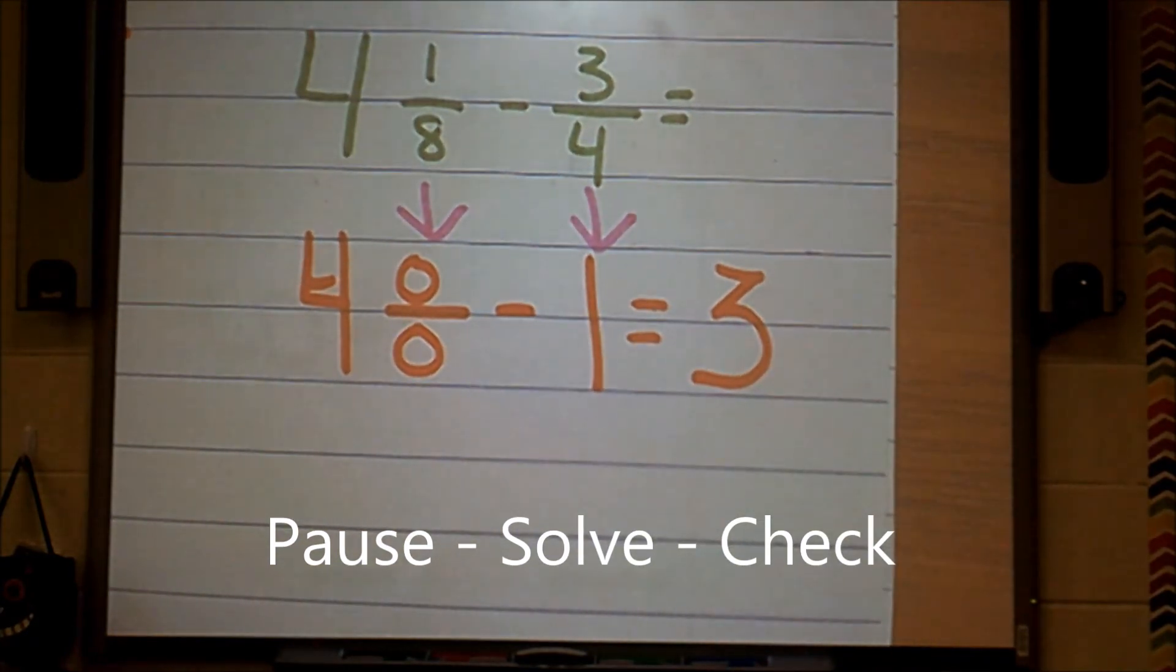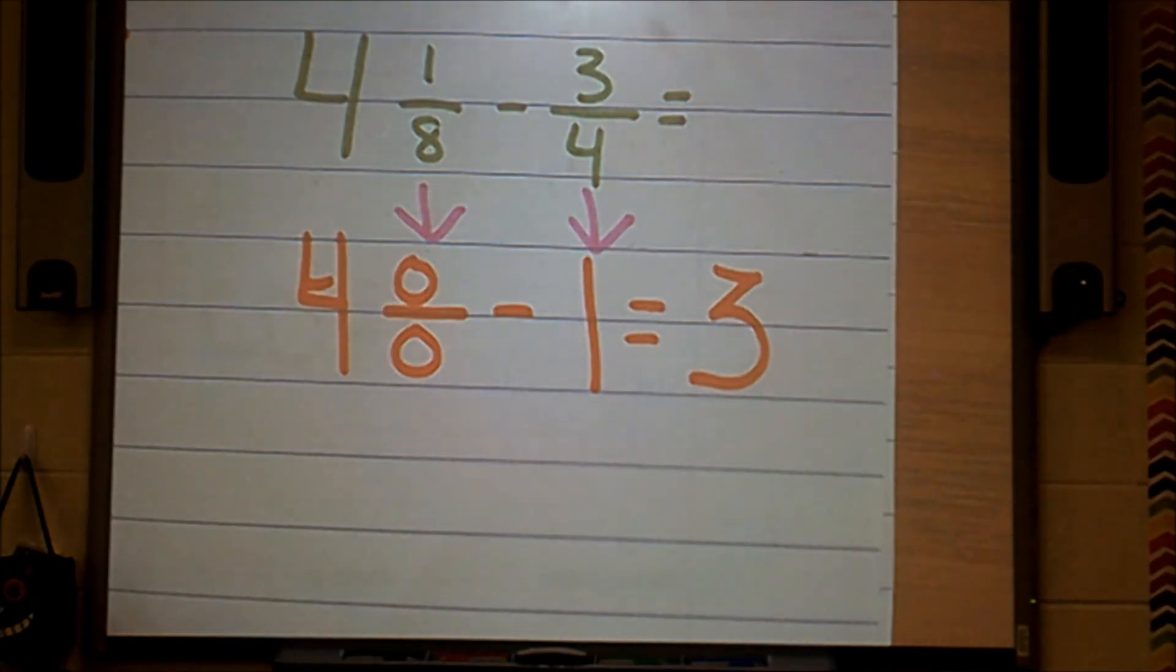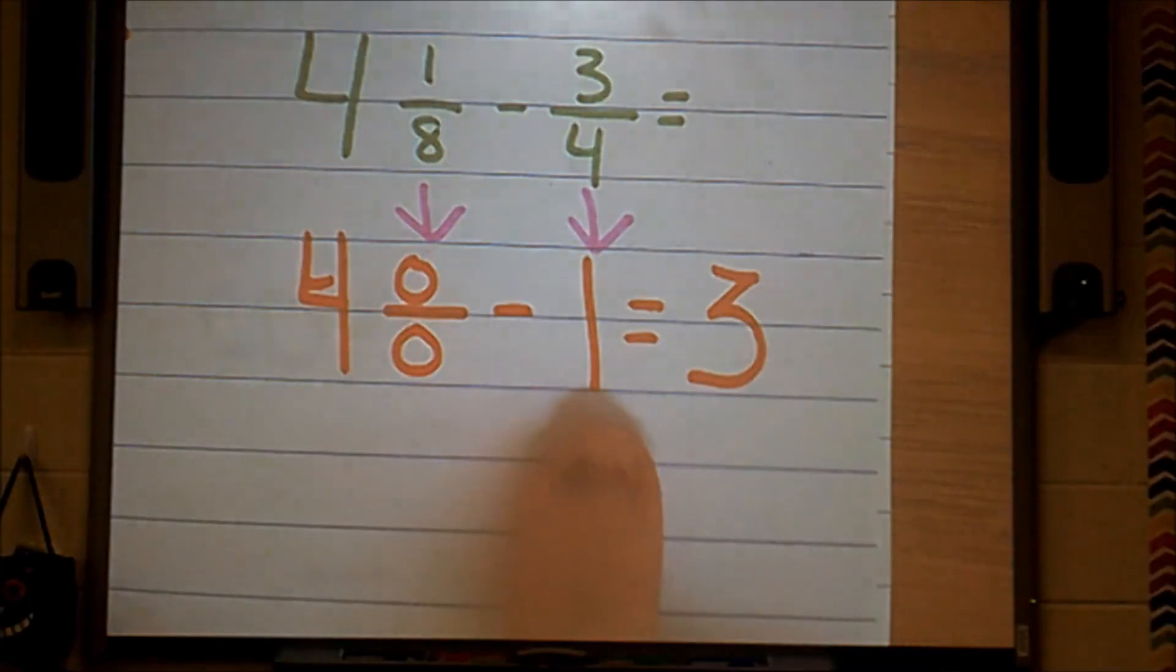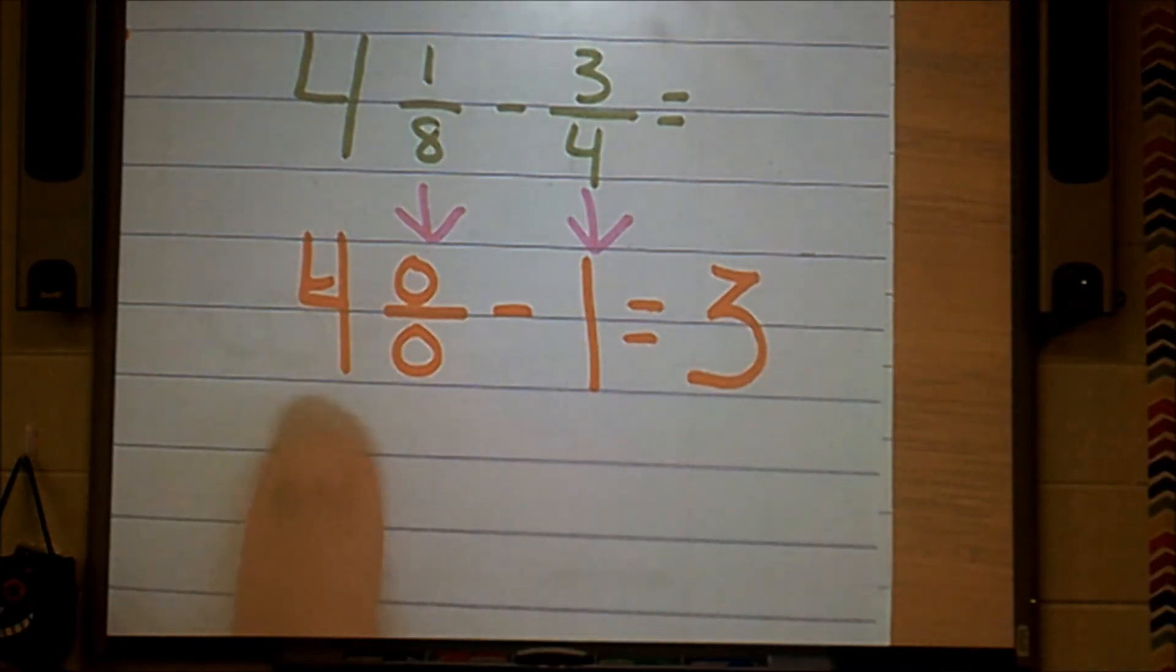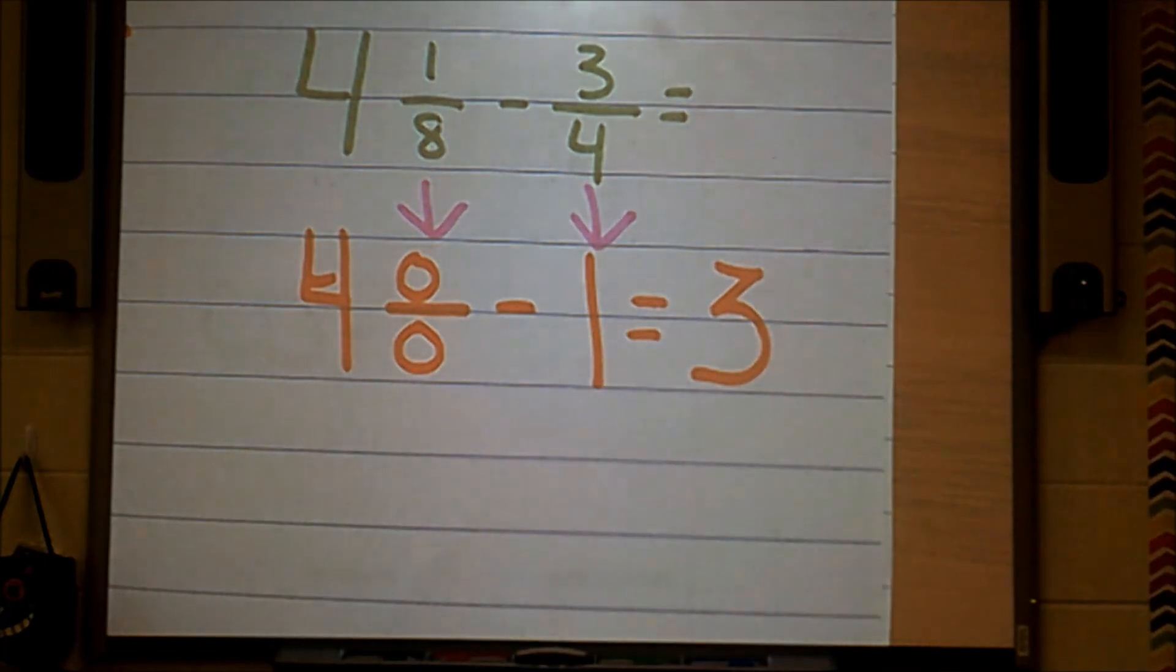So when I looked at this problem, I said 1 eighth is really close to 0. Out of 8 pieces, only 1 of them is colored in. So I made my fraction, I estimated my fraction to be 0. And then my other fraction, 3 fourths, I said is really close to 1 whole. So I estimated the 3 fourths to be 1 whole. So then I simply subtracted 4 minus 1 to give me a difference of 3.